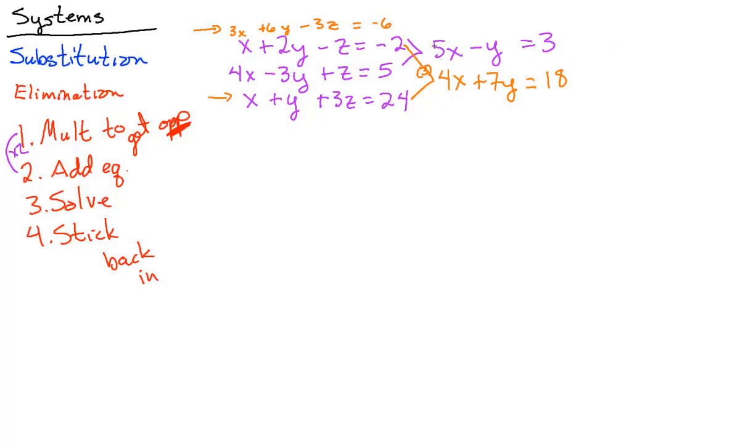So what can we do? We could either times this by negative 4 and this by 5 and get rid of the x's, or we can times the top by 7. And this makes it 35x minus 7y equals 21. So let's do that. 35 and 4, that's 39x. Y's are gone. Equals 21 plus 18. And now we can solve. So note, we had to do this twice. Now we can solve. And we get x equals 1.